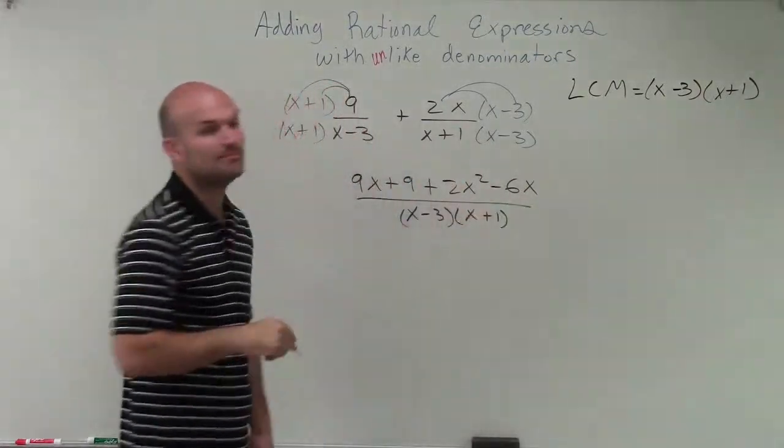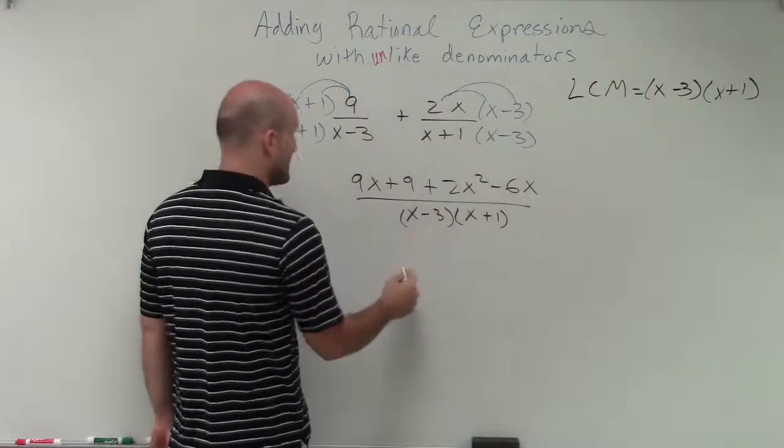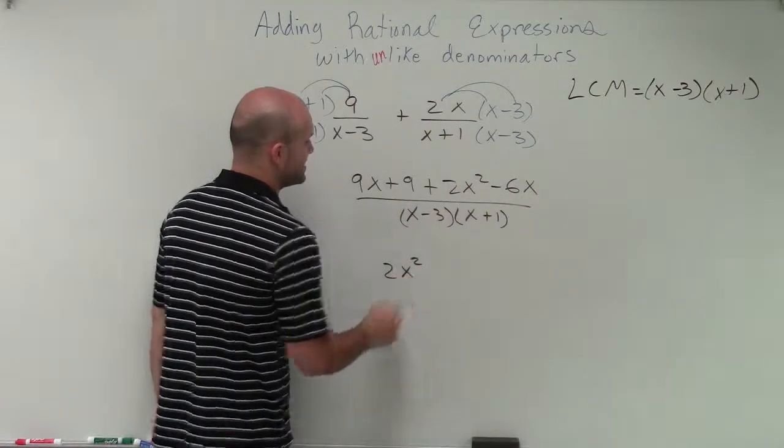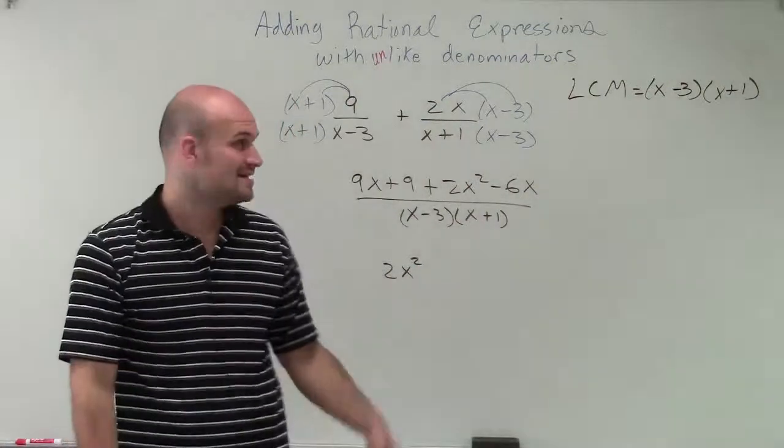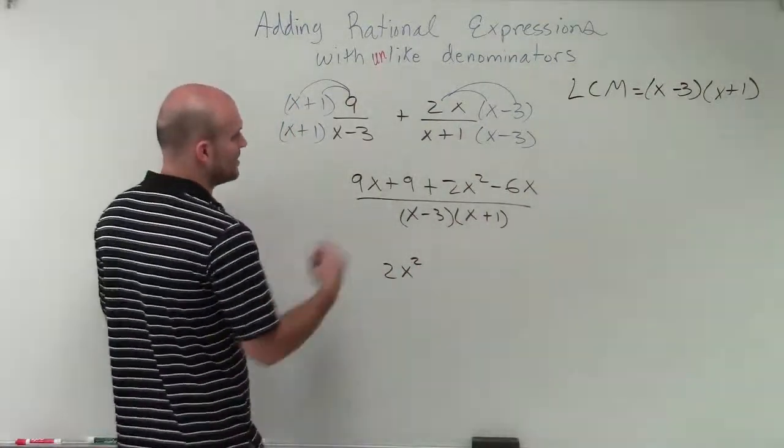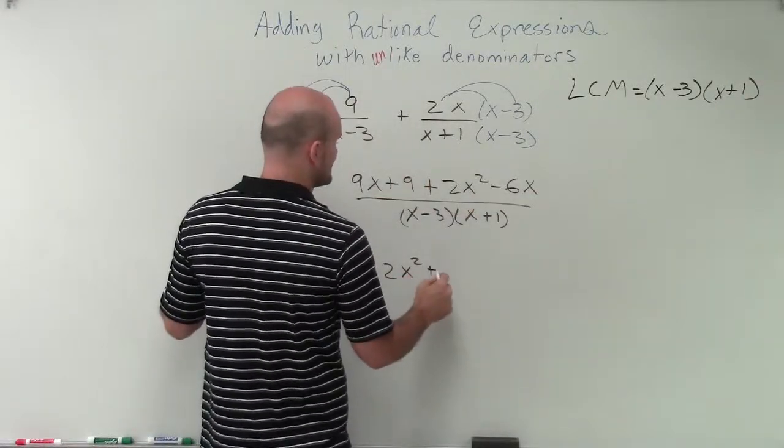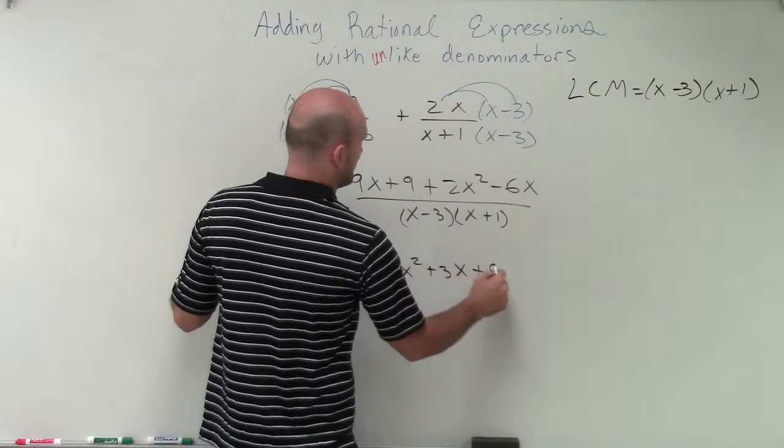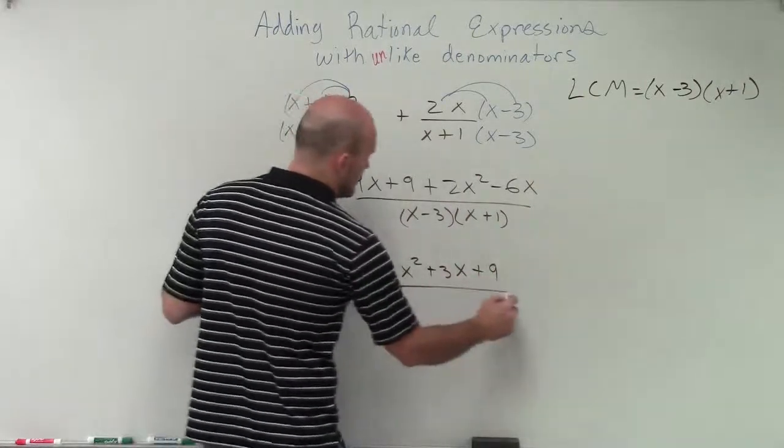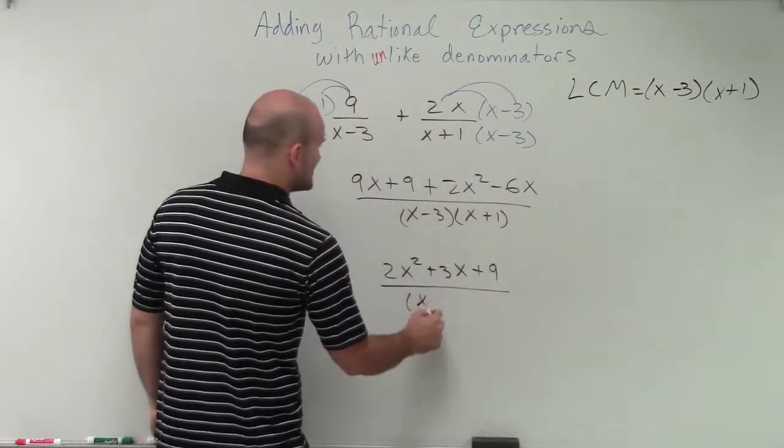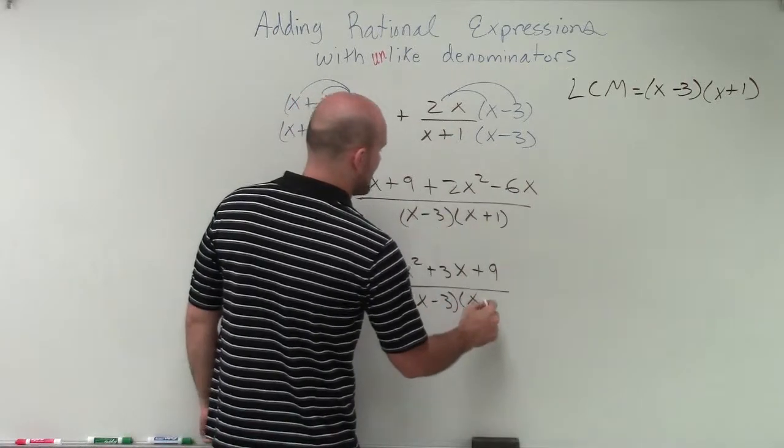Now, I just need to combine like terms. Well, 2x squared, I can't combine that with anything because it has the variable factors of x and x. Nothing else has 2x's. So I'll have 2x squared, 9x minus 6x is going to be a positive 3x plus 9. Then I bring that over, x minus 3 times x plus 1.